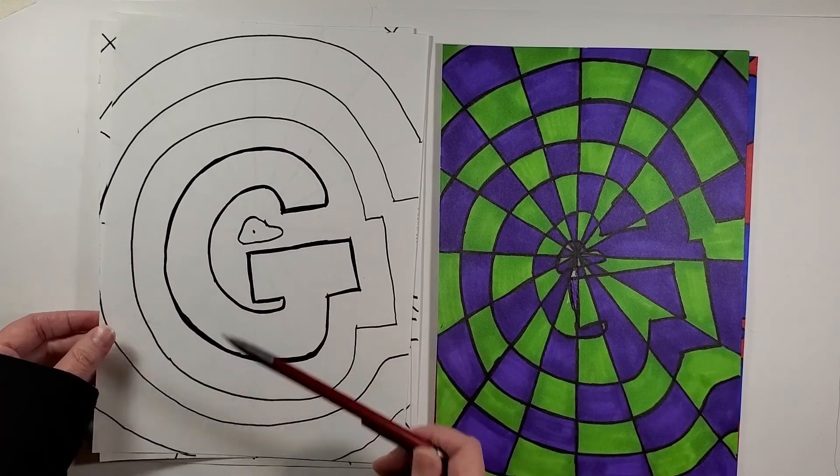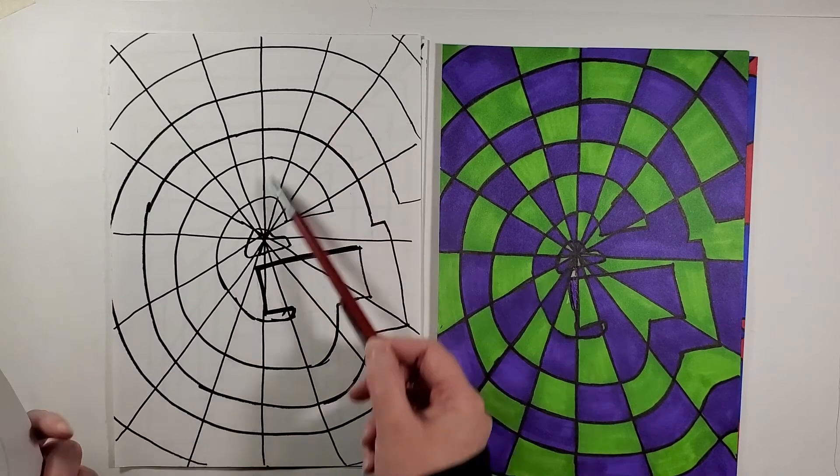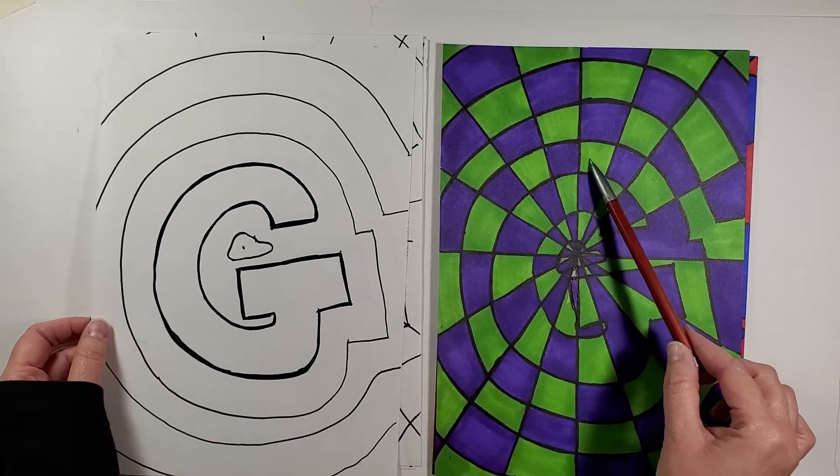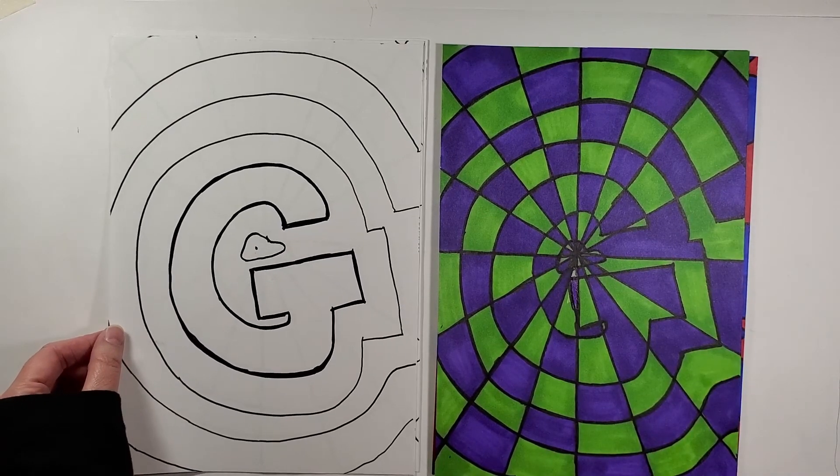Still using the one point, then I did all the vanishing points for the starburst effect, and then was coloring it with my light color and my dark color. And then when I was done, I outlined it in Sharpie again.